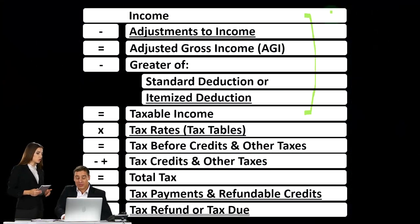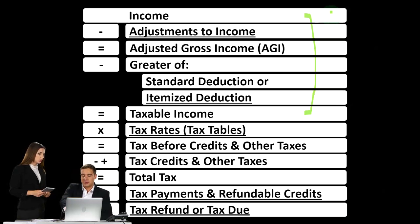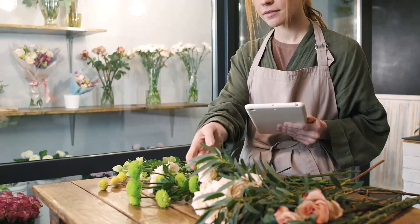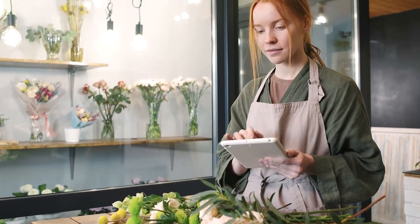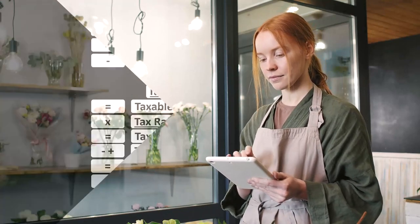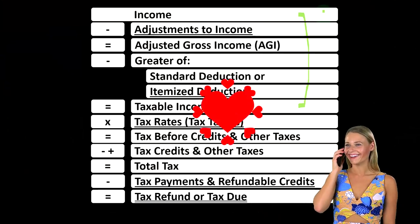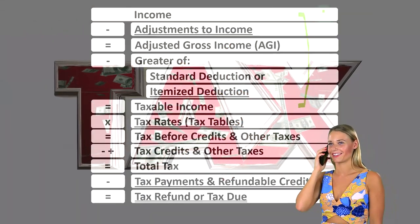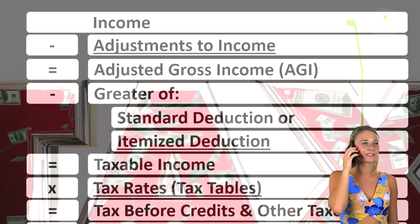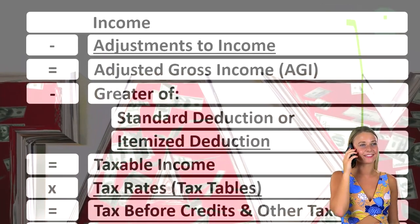Unemployment compensation has the word 'compensation' in its name, so you might think it would have to be included in income. But you might also think this is a welfare or benefit-type program, where it would defeat the purpose to receive money from the government that you'd then have to tax and pay back. However, unemployment compensation is generally going to be a taxable event.